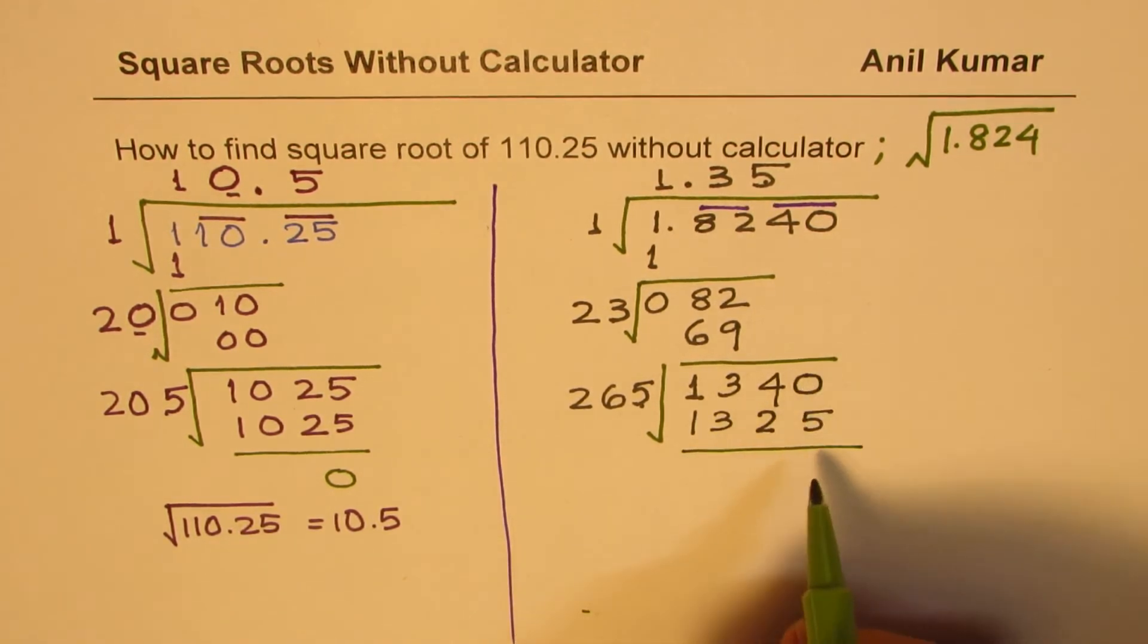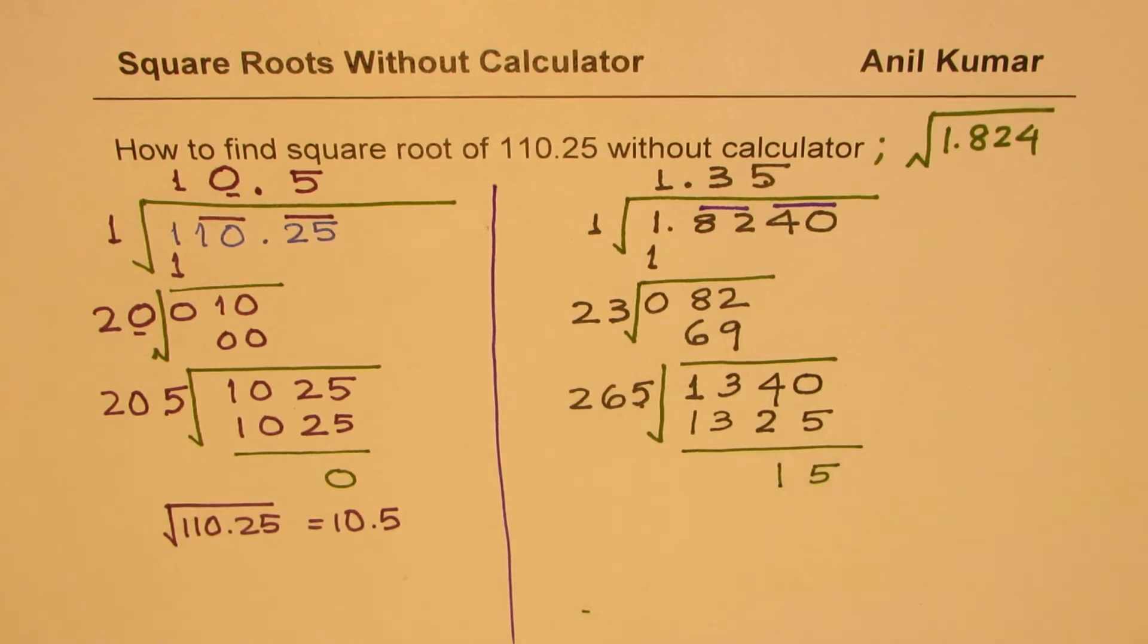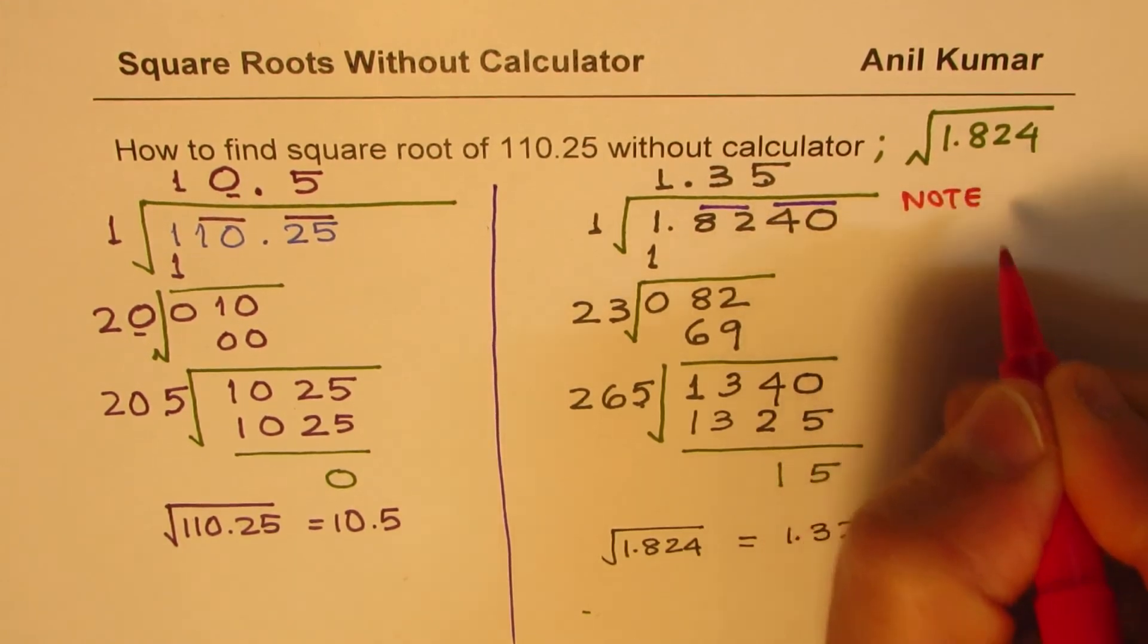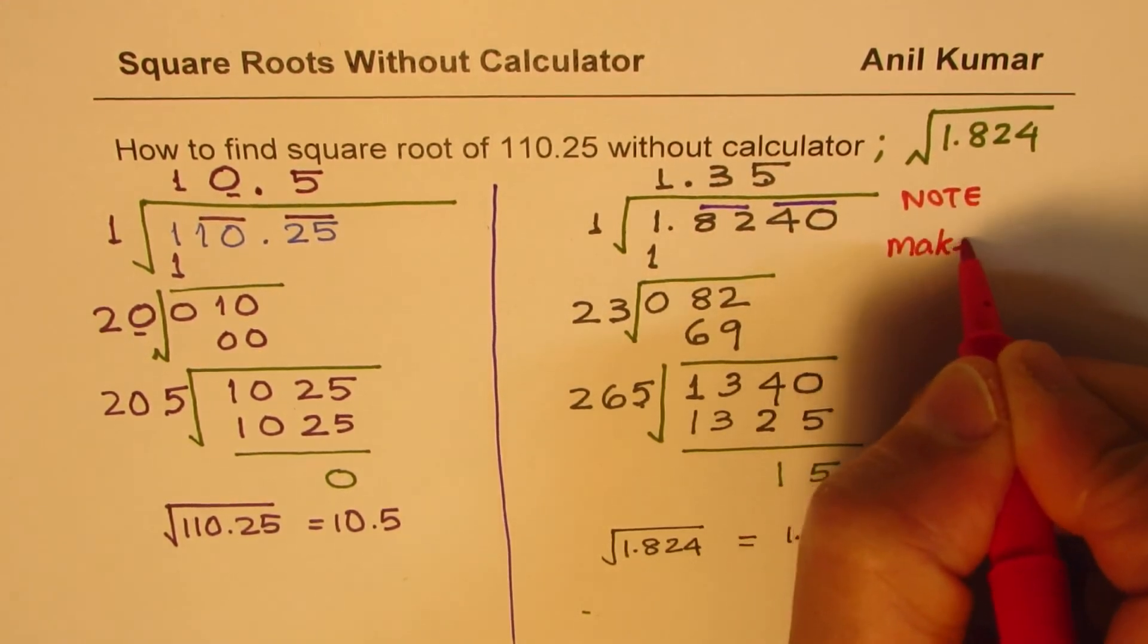And now here we have a remainder. So this is not the exact value, but for two decimal places, it is good enough. So what we get here is that square root of 1.824 is equal to 1.35. This is accurate to two decimal places. So what do we note from here? Make set of 2s.